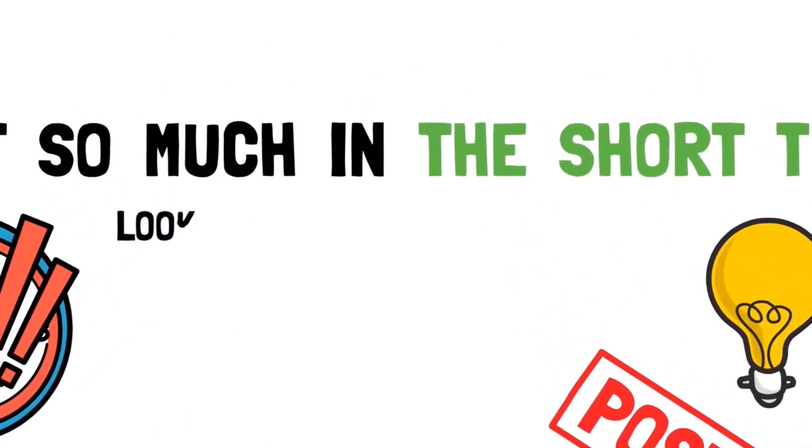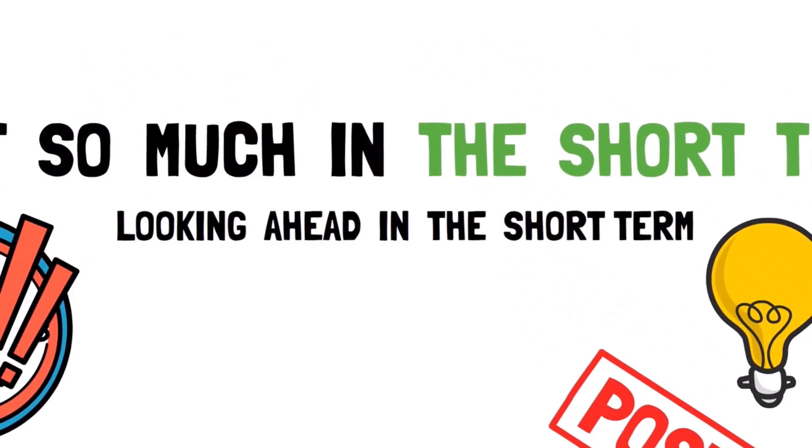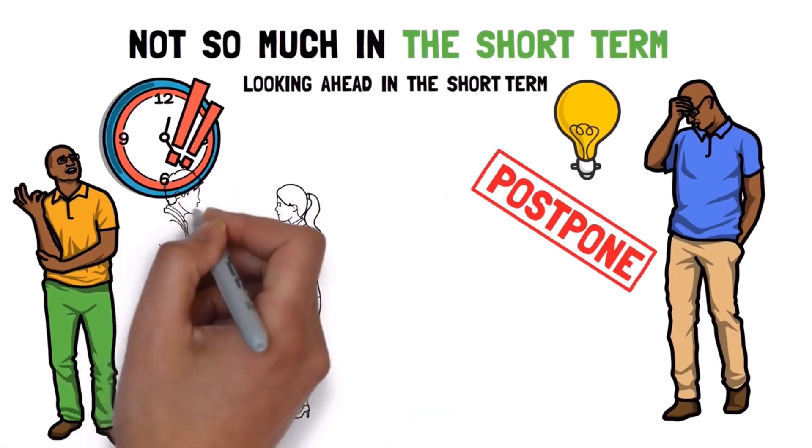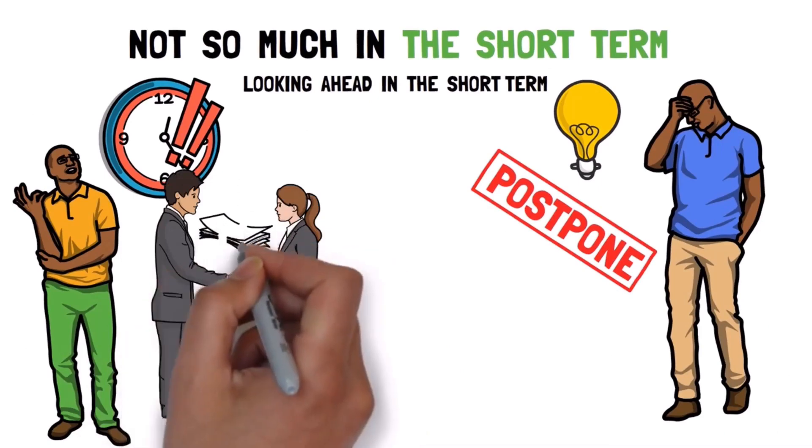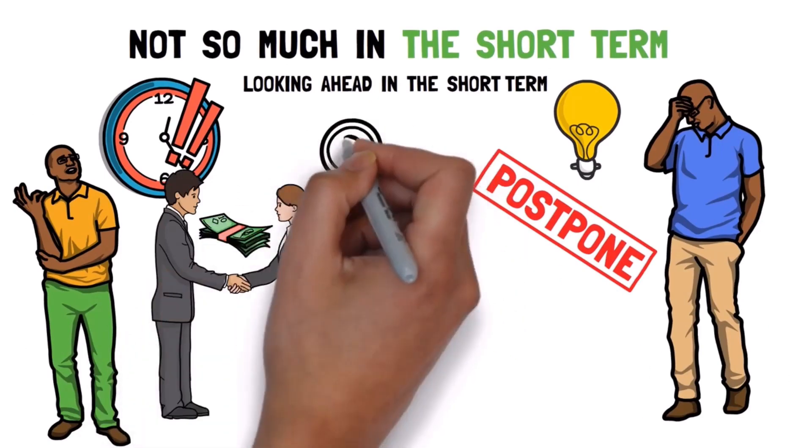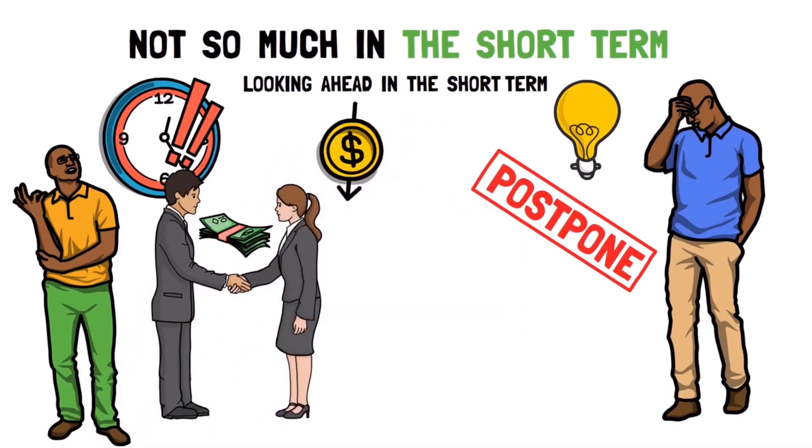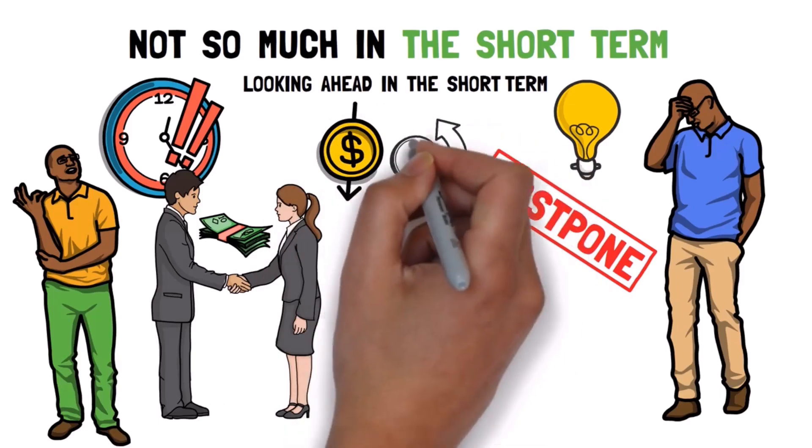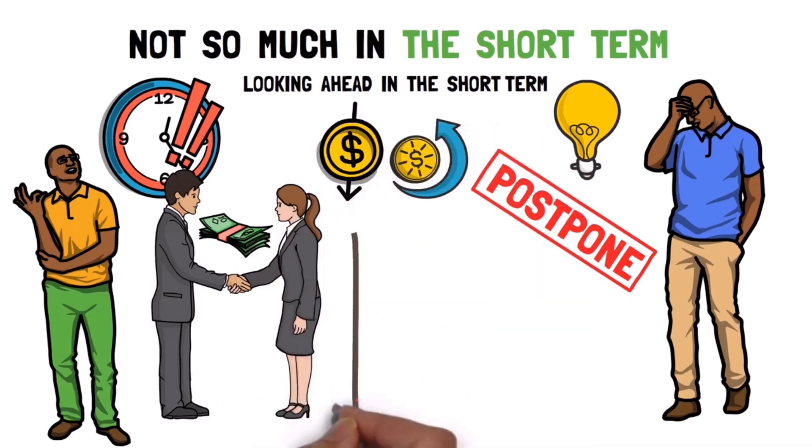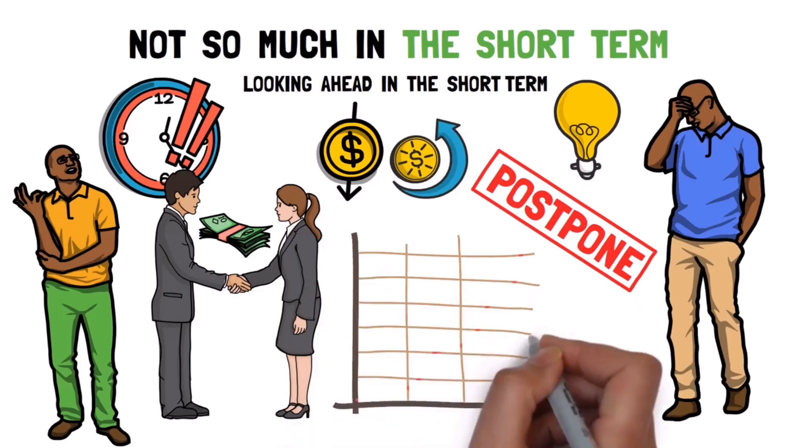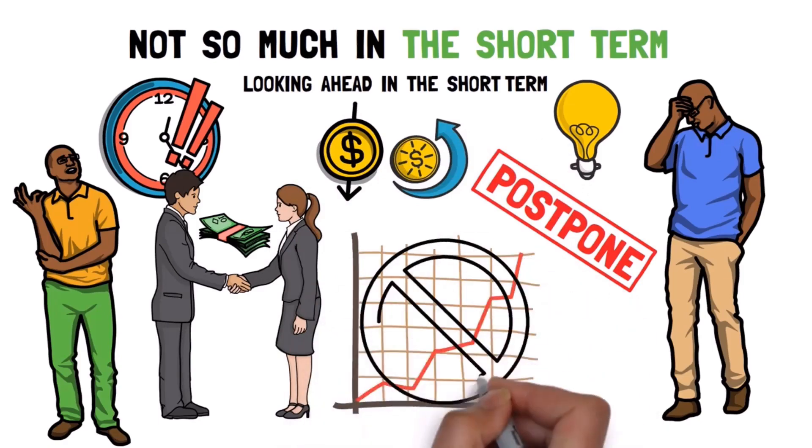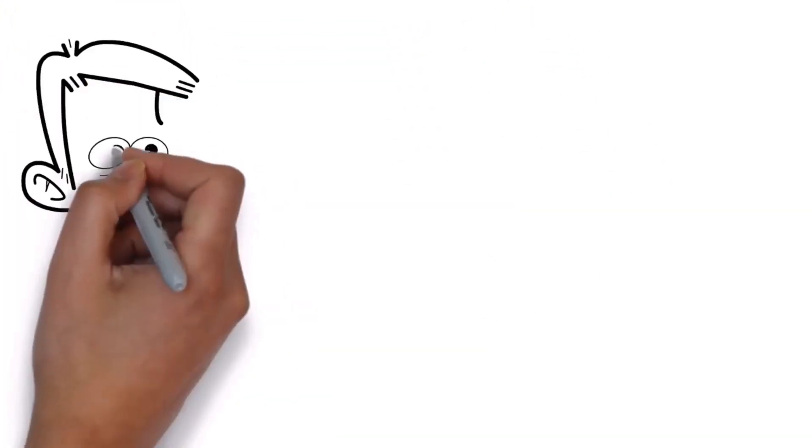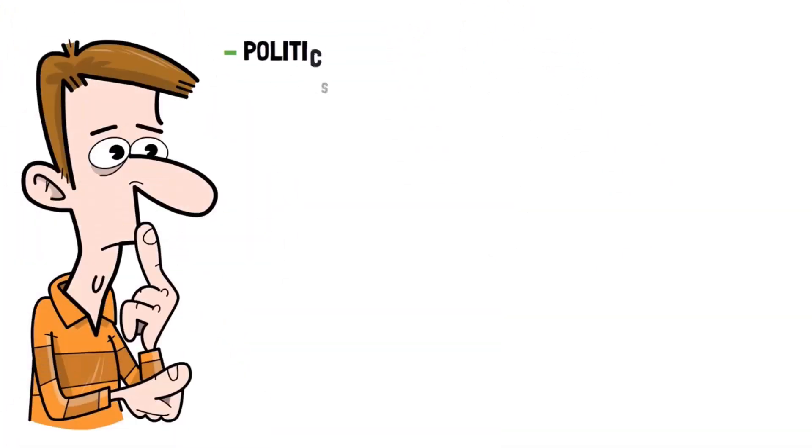Looking ahead in the short term, Ray Dalio thinks that unless there's a situation where the government is trying to sell a lot more debt than people want to buy, we might have a period of OK, but not great economic growth and somewhat higher inflation. This is something he's been talking about for a while, where inflation stays high even when the economy isn't doing so well. But he also admits that it's hard to predict the future because of things like politics, world events, the environment and technology.